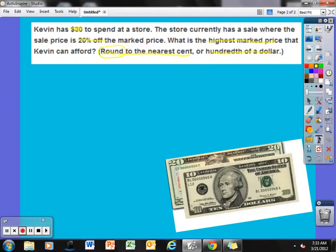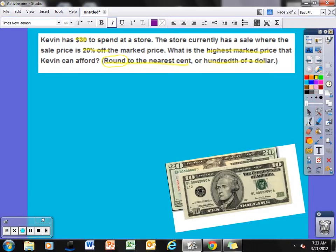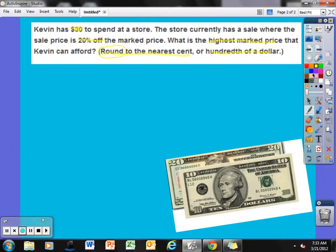Alright, taking a look at this, I don't know what the sales price is. That is an unknown. I'm going to call this S, or I'll call it P for price. Sometimes my S's look like 5's. So call it P for price. That's unknown.